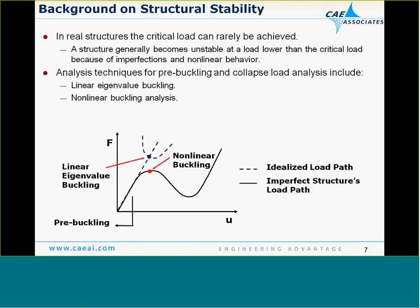When you go to do this in finite elements, there are two different ways to approach it. One is called linear eigenvalue buckling, which is essentially the same as calculating the theoretical limit — what you would derive from first principles or find in a textbook. That is typically non-conservative because in reality the structure is not going to be a perfect model. You will have an imperfect structure, which will buckle sooner, and we can calculate that response using a nonlinear buckling analysis.